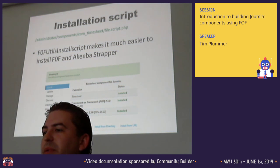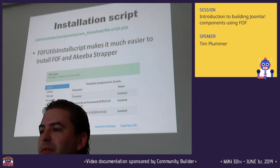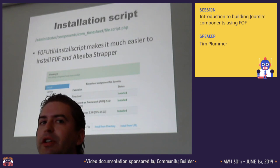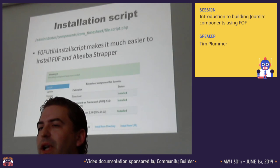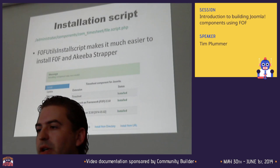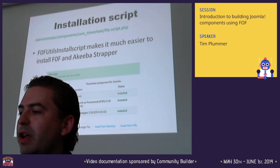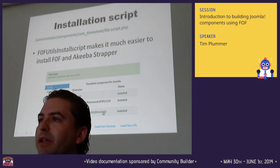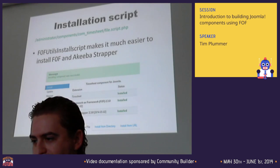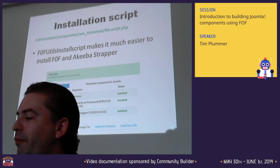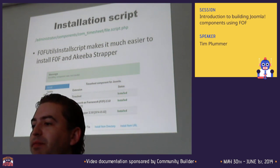The installation script is one area where F0F has massively improved over FOF - it's much simpler to create. With just a few lines, your component can check the version of F0F currently installed: if it's older, it installs the newer version; if it's already the correct version, it skips it. Same with KeepAStrapper. If you install the component a second time, all you see is a message saying it's installed, because F0F and KeepAStrapper would already be there from the first install. If you use any of the Akiba extensions, you probably already have these installed anyway.